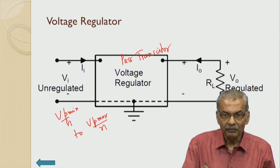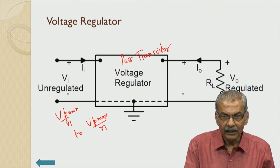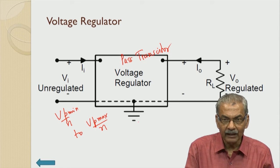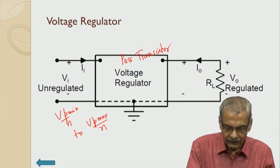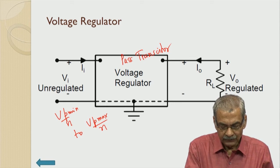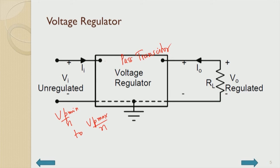It is equivalent to a potential divider where the output is adjusted to remain constant by comparing with a reference and varying the drop across the series resistance. This series resistance is replaced by an active device — the pass transistor — and the control circuit continuously changes the voltage drop across it to maintain constant output.